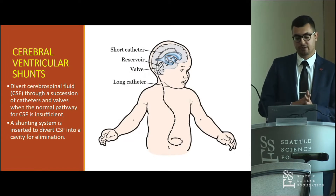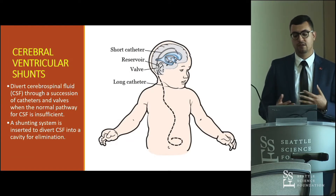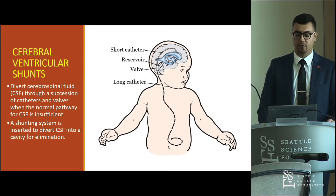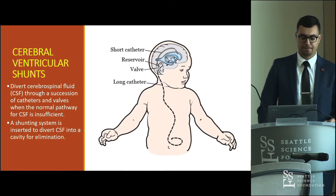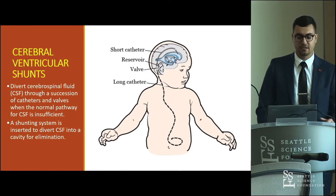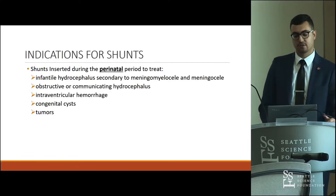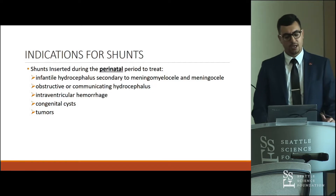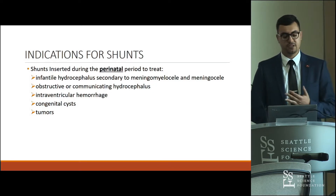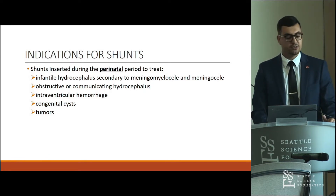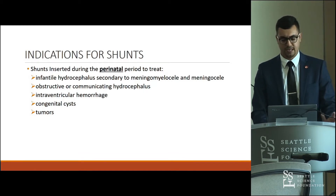Cerebral ventricular shunts are devices meant to divert CSF through a series of catheters and valves when the normal pathway for CSF is insufficient — essentially a shunting system to divert CSF into a cavity for elimination. Indications include the perinatal period: infantile hydrocephalus secondary to meningomyelocele or meningoceles, obstruction or communicating hydrocephalus, intraventricular hemorrhage, congenital cysts or tumors — anything causing blockage of the normal CSF pathway.